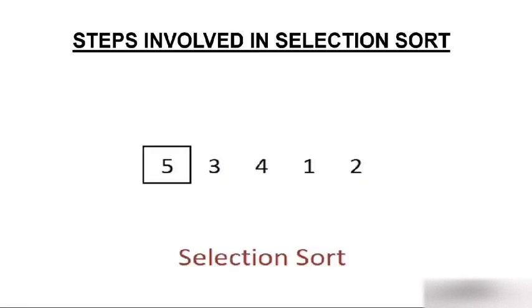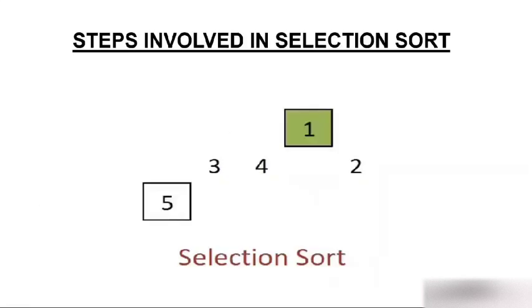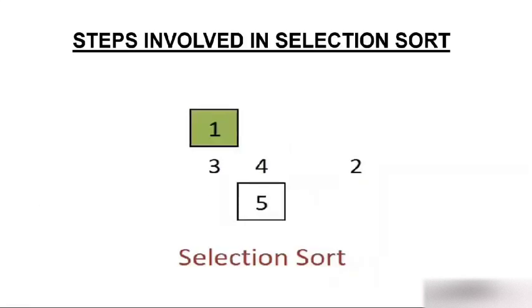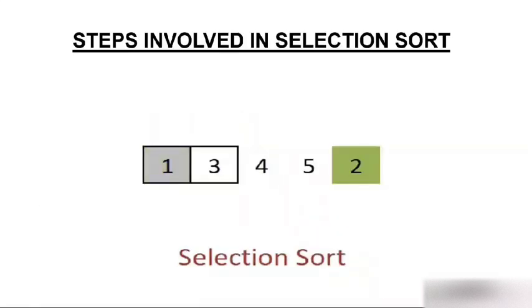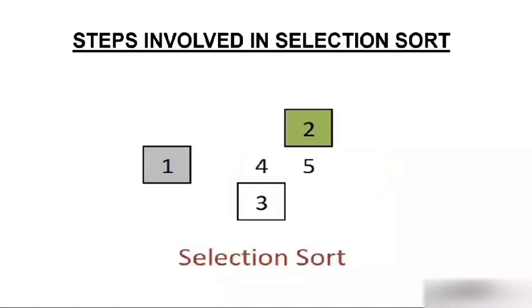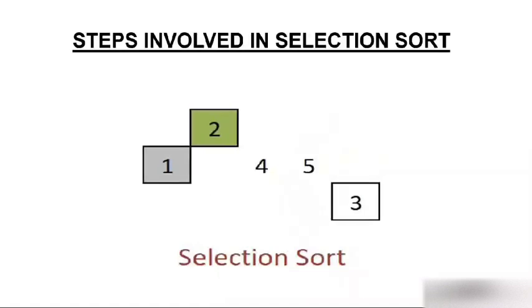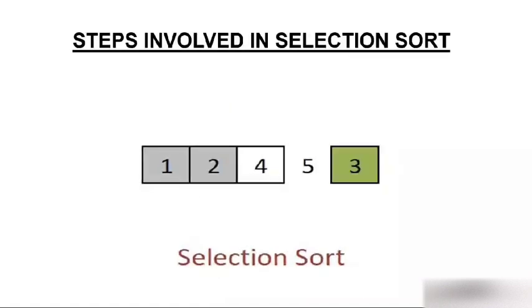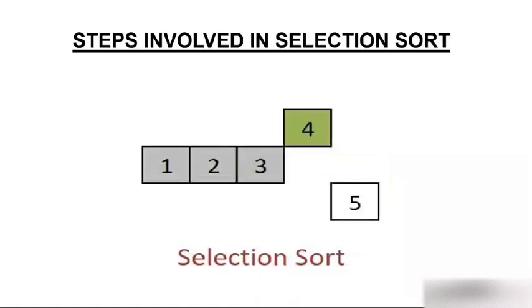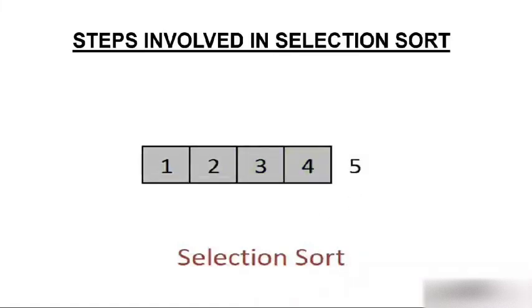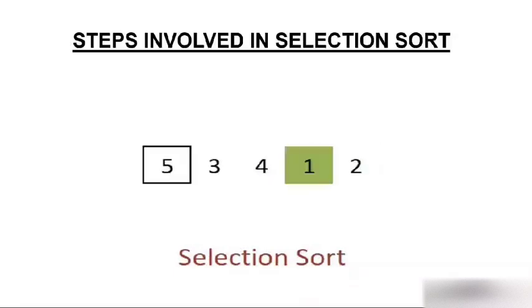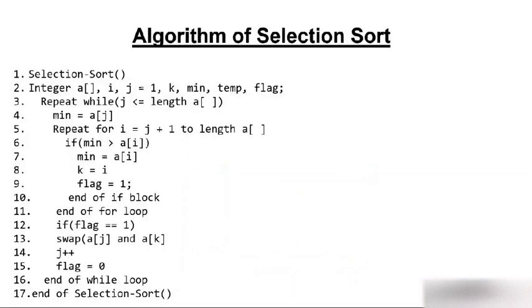Here are the steps with five elements. One is the minimum — it takes the first position. In the remaining elements, two is the minimum — it takes the second position. Three is the minimum — it takes the third position. Four is the minimum — it takes the fourth position. The fifth remaining element is already sorted.